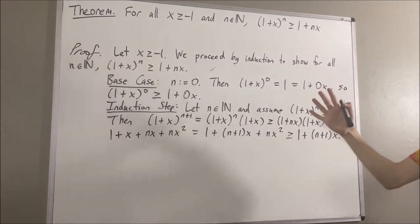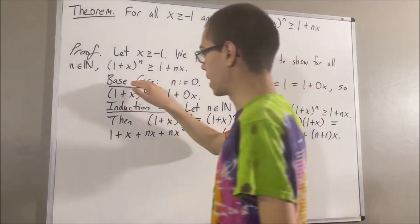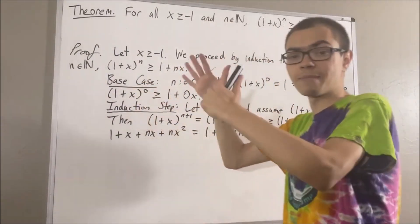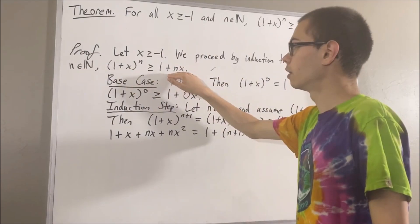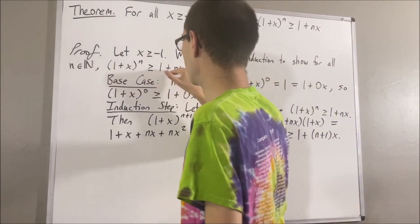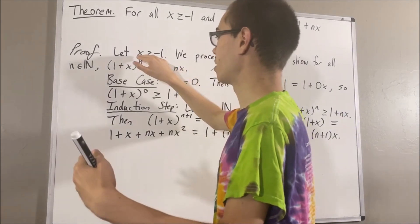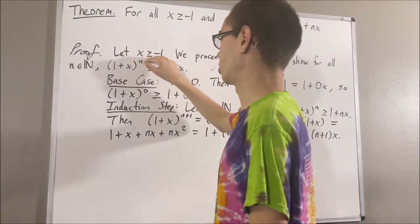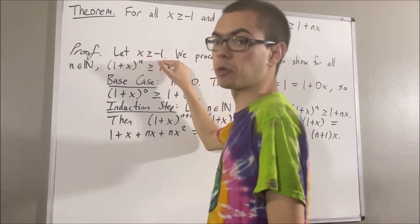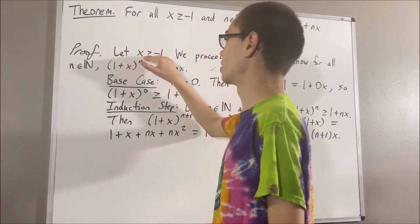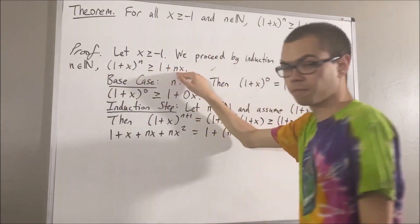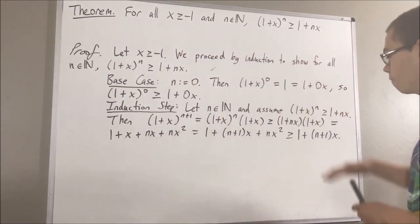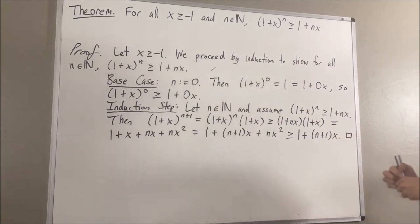Since we've completed both the base case and the induction step, we have shown by mathematical induction that for all natural numbers n, this is true. And we showed this under the assumption of some arbitrary real number x greater than or equal to negative 1. Since x was arbitrary, this means we have shown for all real numbers x greater than or equal to negative 1 and every natural number n, this is true. And that's exactly what we wanted to prove. So, this completes the proof.